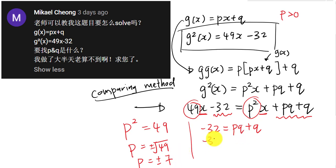Then I will compare the constant, which is the value without x here. Then I will have negative 32 equals to pq plus q. And I just got my p is positive 7 or negative 7. Let's say it's positive 7. Then I have 7q plus q here, then I have 8q equals to negative 32.